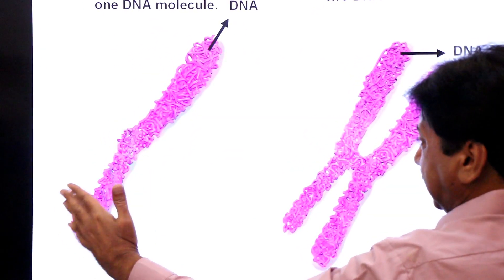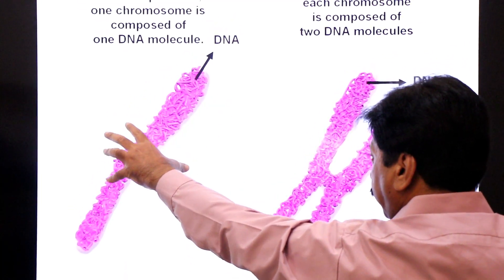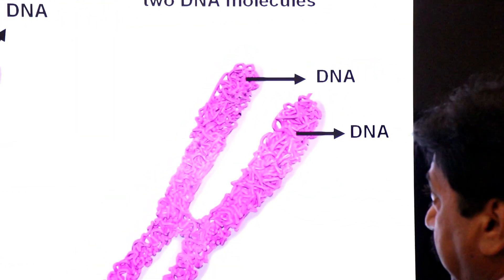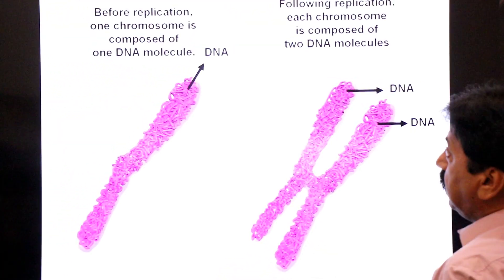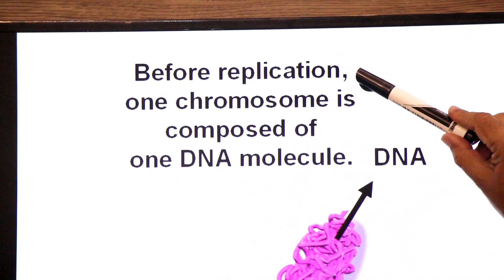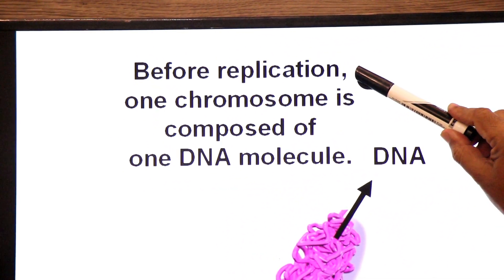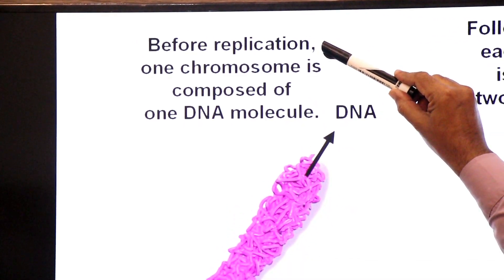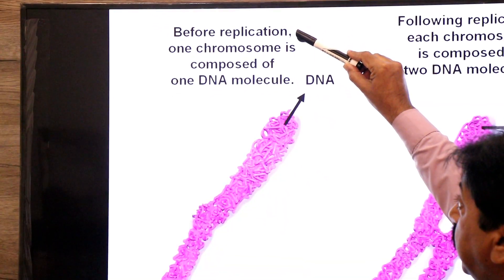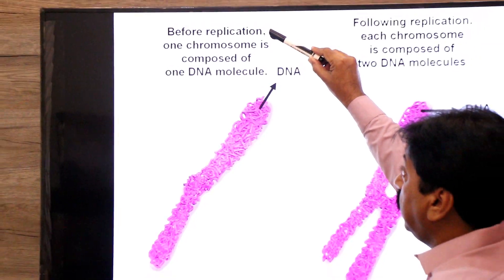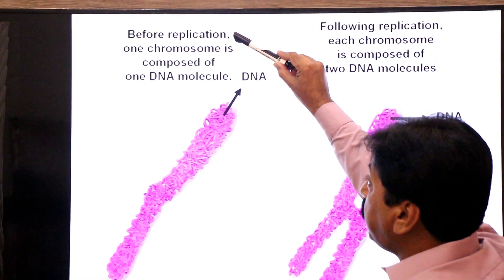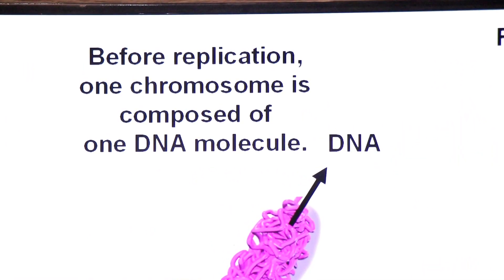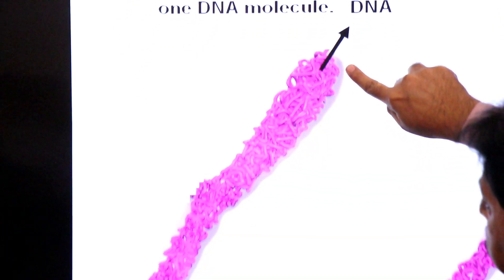Now note the states of a chromosome. Before replication, one chromosome is composed of one molecule of DNA. Self-duplication is called replication. Before replication, one chromosome has one molecule of DNA, from one telomere to another.